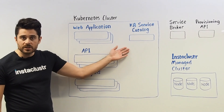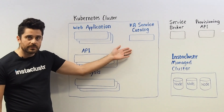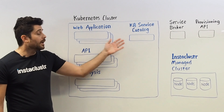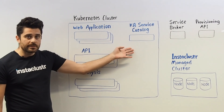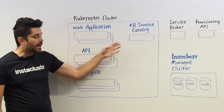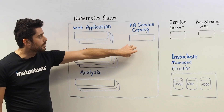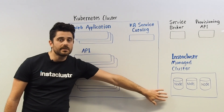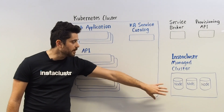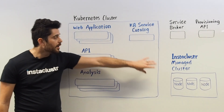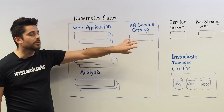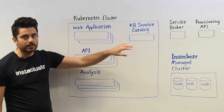That provisioning will take place on the InstaCluster side of things, and once that instance is ready you now have a running instance that is Kubernetes native. It's still running in the InstaCluster environment outside, but your Kubernetes cluster knows about it natively.